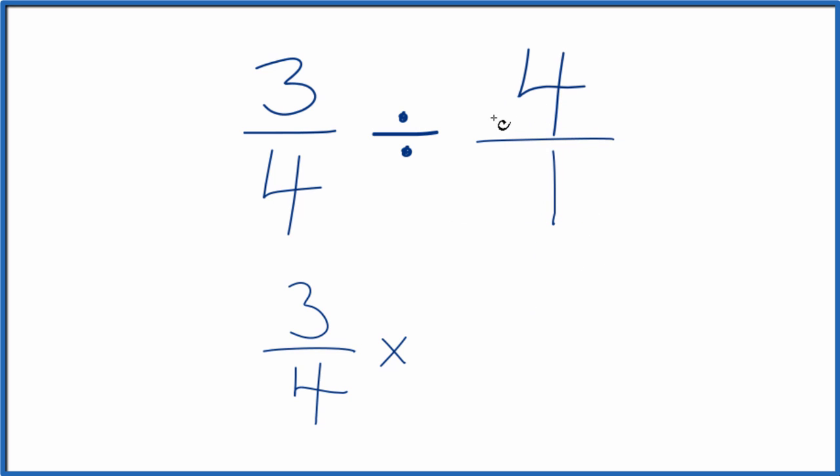So to take the reciprocal of four over one, we move the four down to the bottom, and then we take the one up to the top. So now we have as our numerator one, and our denominator, that's four. So one-fourth, that's a reciprocal of four.